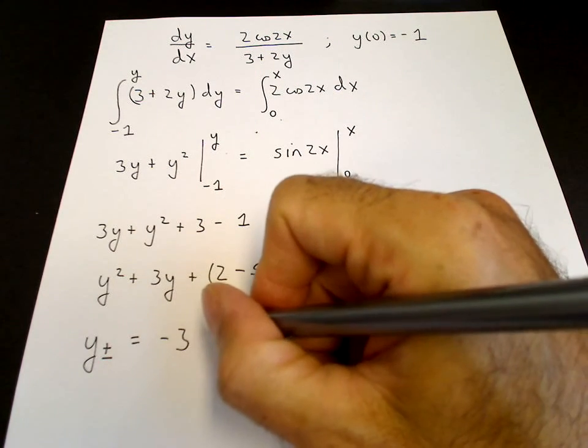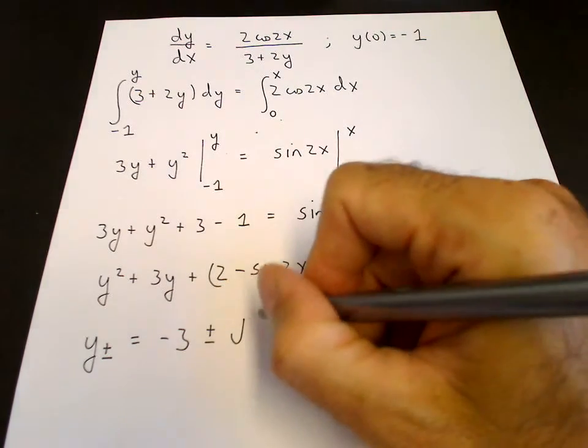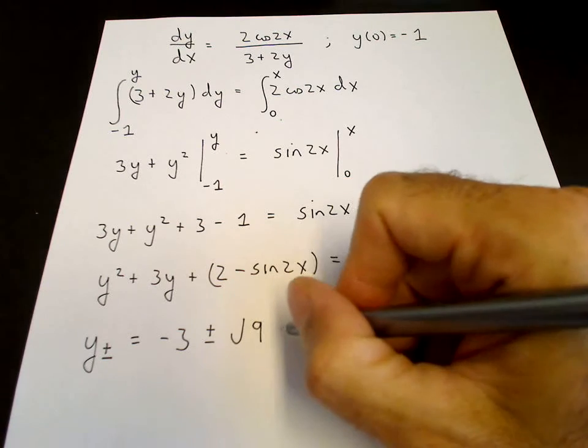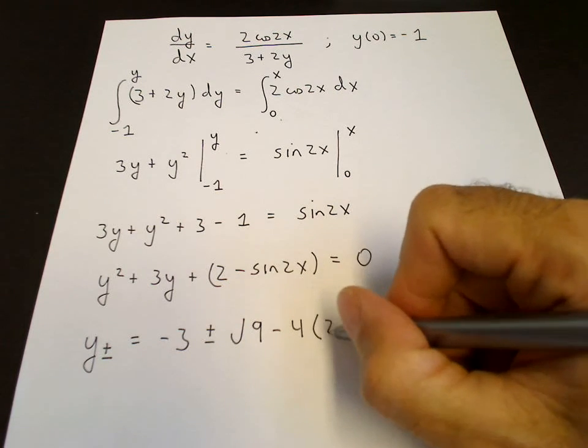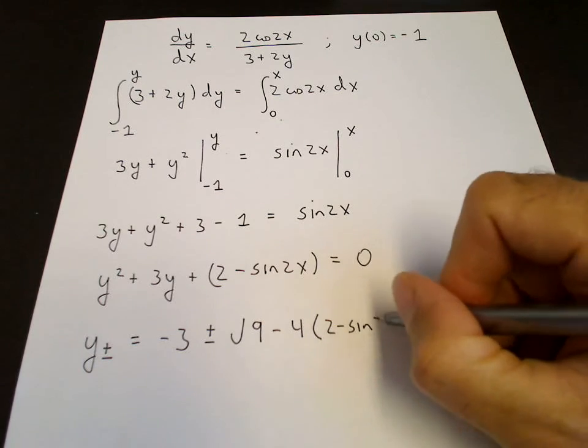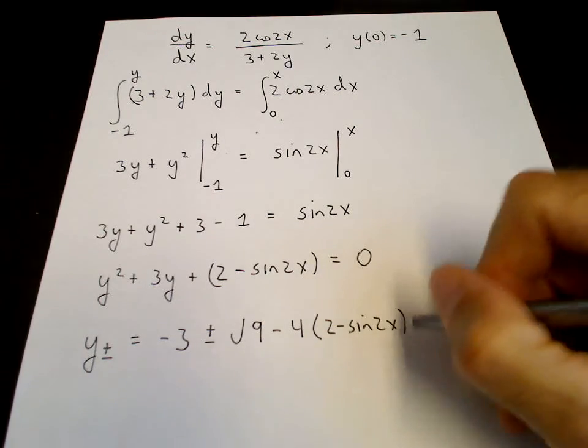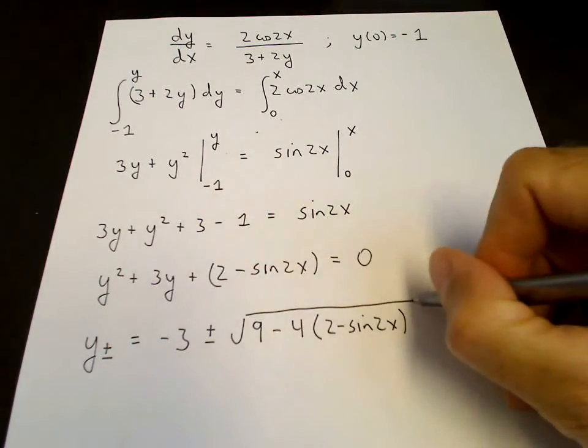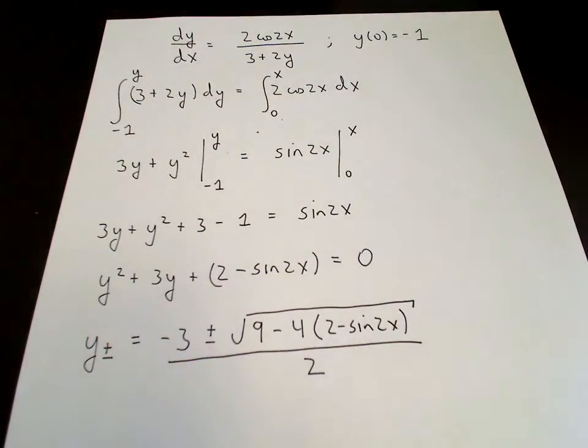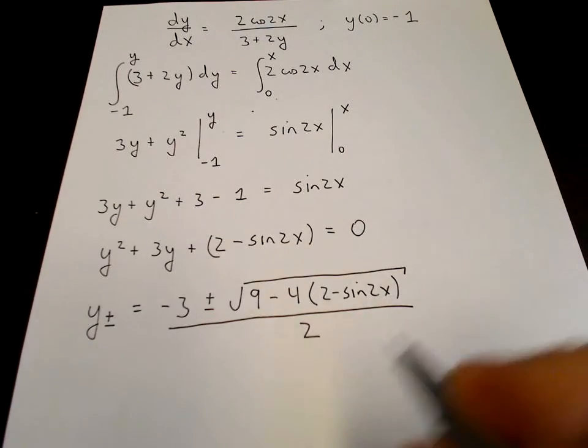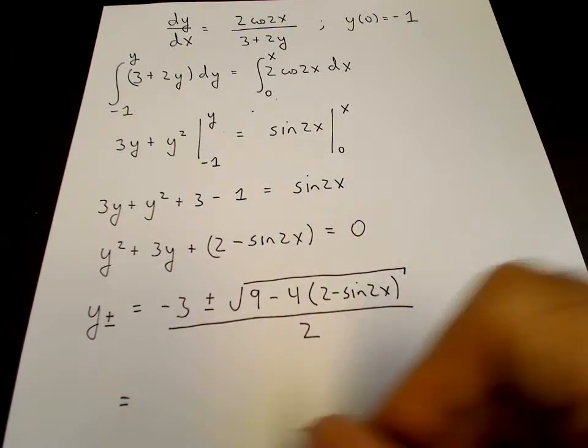So the two solutions are negative b, negative 3, plus or minus the square root of b squared, 3 squared, 9, minus 4a is 1, c is 2 minus sin2x, over 2a, which is 2. And then it always pays to simplify these things.